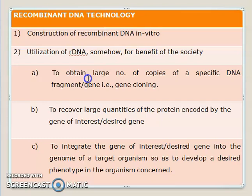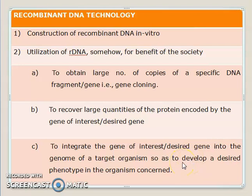If you do not have multiple copies of your gene, neither will you be able to produce large quantities of the protein encoded by the concerned gene, nor will you be able to integrate that gene into the target organism so as to confer some useful character. So the first and very prime objective of RDT is to clone a particular gene, to clone a desired gene.